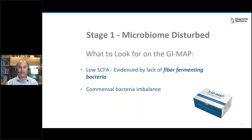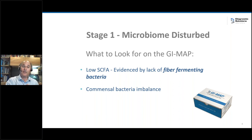Looking at this from the gut perspective first — then the brain, then cases to tie these together — what do you look for on the GI map? Is there a problem with the microbiome? This is the first stage of the disruption of the gut. Low short chain fatty acids will be seen on the lab in the commensal bacterial section. You'll see commensal bacterial imbalance in the normal bacterial section. If those markers are skewed low, you can be pretty sure that short chain fatty acid production — the main one called butyrate — is going to be low.